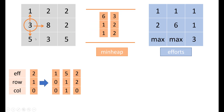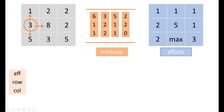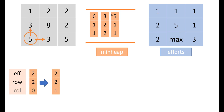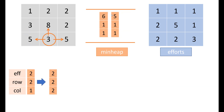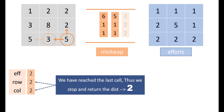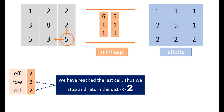When processing cell (1,2) with effort 2, we compute (2,2)'s effort as max(2, |3−8|)=5 and update accordingly. Continuing the process, the effort for (2,2) eventually gets updated to 2 via the optimal path. Once we pop the last cell from the heap, we stop and return the value stored in the efforts matrix for that cell, which is 2.